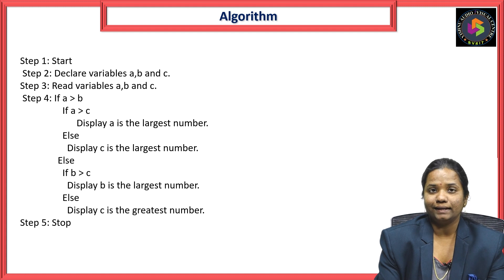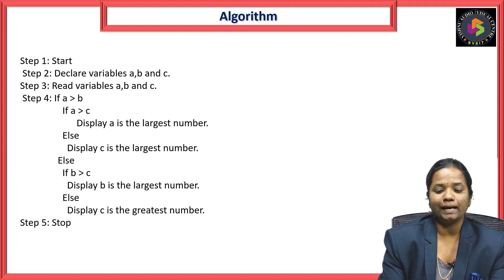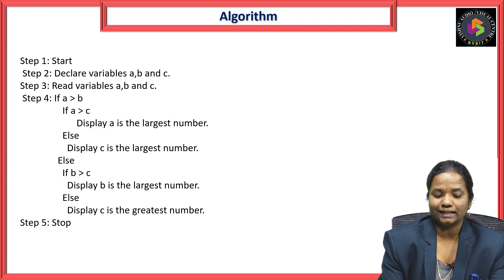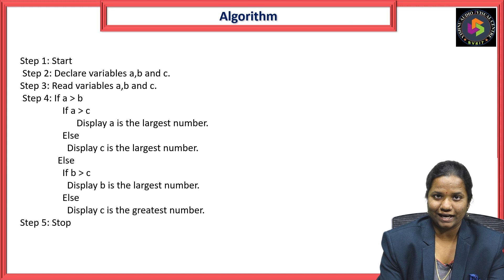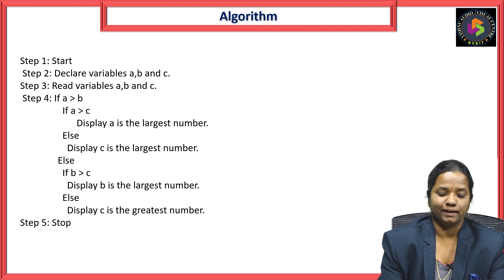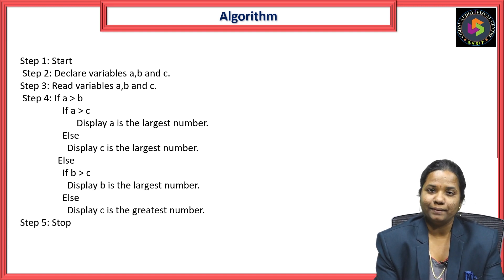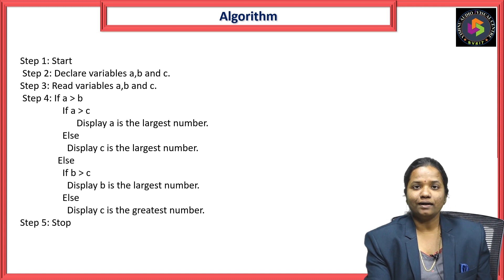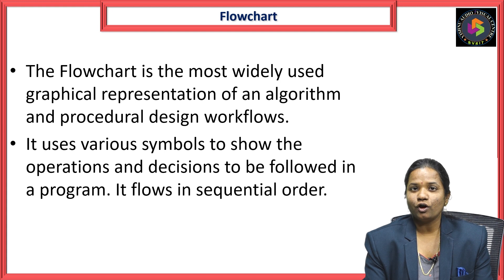Step one: Start. Step two: Declare three variables a, b, and c. Step three: Read a, b, and c. Step four: Check if a is greater than b. If true, check if a is greater than c — if both conditions are true, print a. Else if a is greater than c is false, print c. Else if b is greater than c is true, print b; if false, print c. Step five: Stop.